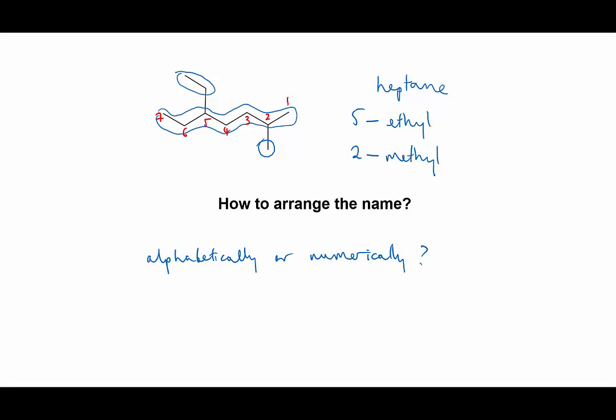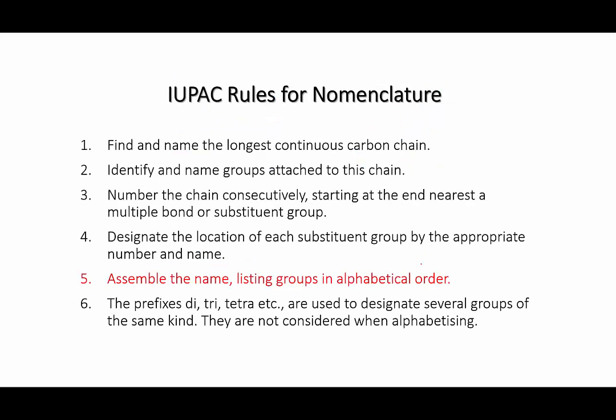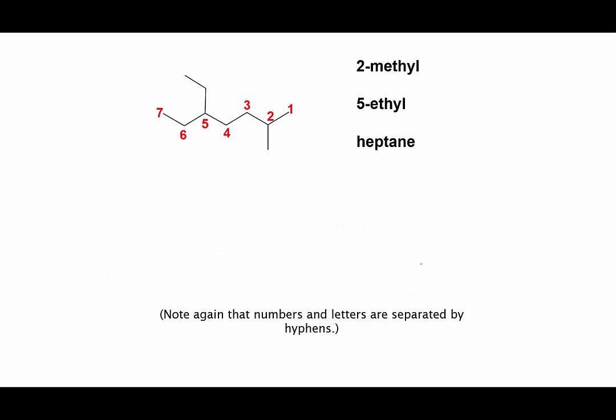Well, again, the rules come to our rescue. So number five tells you that when you assemble the name, you should list the substituent groups in alphabetical order. So that means that this molecule is called 5-ethyl-2-methylheptane.